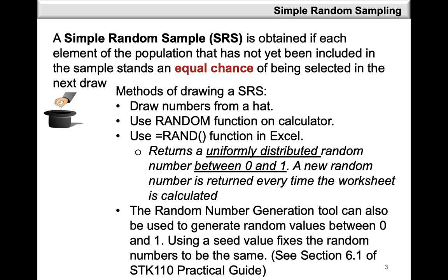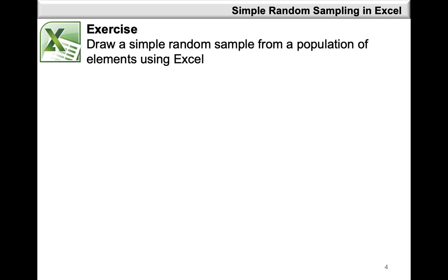Similarly, in Excel we can make use of the Random Number Generation tool that also generates random numbers between 0 and 1, and you can make use of a seed value that is going to fix the random numbers so that they don't keep changing. In section 6.1 of this practical guide, there's more information concerning how to use the Random Number Generation tool. Now let's take a look at how to draw a simple random sample from a population of elements by using Excel.